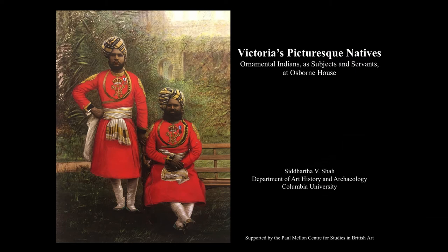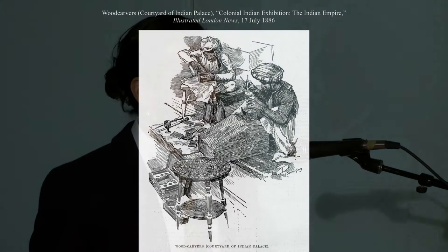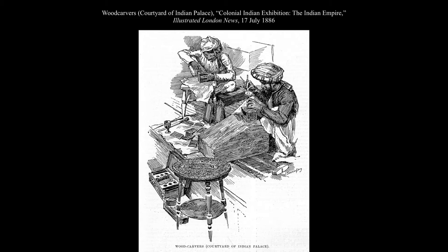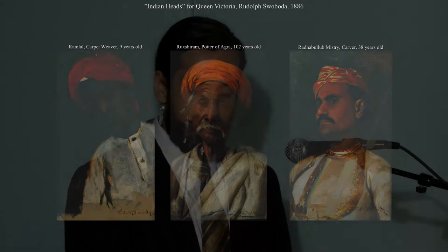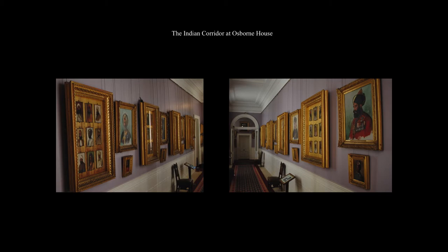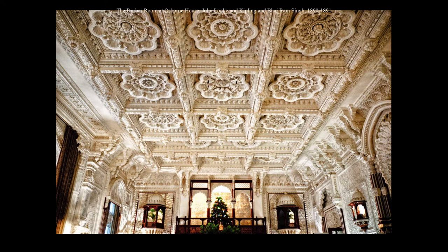A shipment of 34 Indians arrived in London in the early summer of 1886, brought in to make crafts in a living display of village life at the Colonial and Indian Exhibition. Queen Victoria took great interest in the features and mannerisms of the curious natives and commissioned Rudolf Swoboda to paint five of their portraits. Pleased with the picturesque heads she received, the Queen dispatched him to India to produce even more paintings — heads representing the various regional types of her most prized imperial possession. Today, nearly 100 Indian heads fill a corridor in Osborne House on the Isle of Wight, leading to a lavish Darbar room inspired by the grand reception halls of princely India.